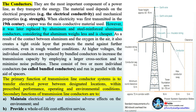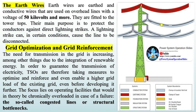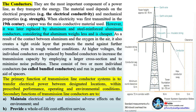When electricity was first transmitted in the 19th century, copper was the main conductive material used. However, it was later replaced by aluminum and steel-reinforced aluminum conductors, as aluminum weighs less and is cheaper. As a result of contact between aluminum and the oxygen in the air, it also creates a tight oxide layer that protects the metal against further corrosion, even in rough weather conditions.